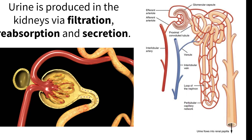A large amount of water and solute from the filtrate is reabsorbed back into the blood from the proximal convoluted tubule. More water is reabsorbed from the filtrate into the blood via the thin segment of the descending limb.